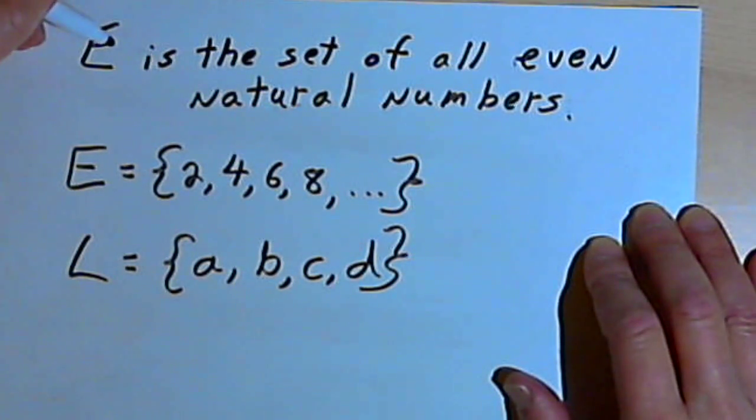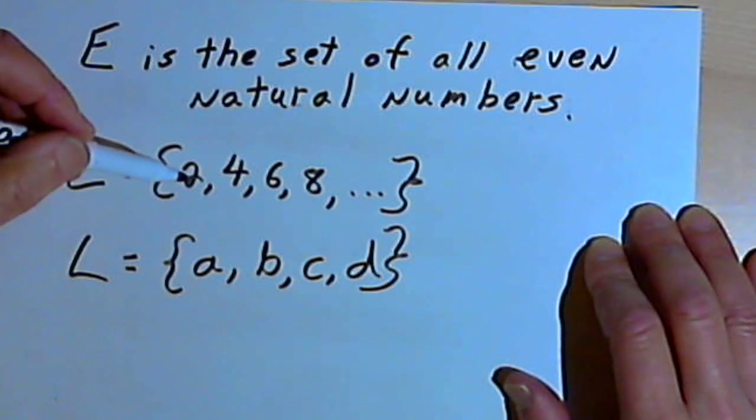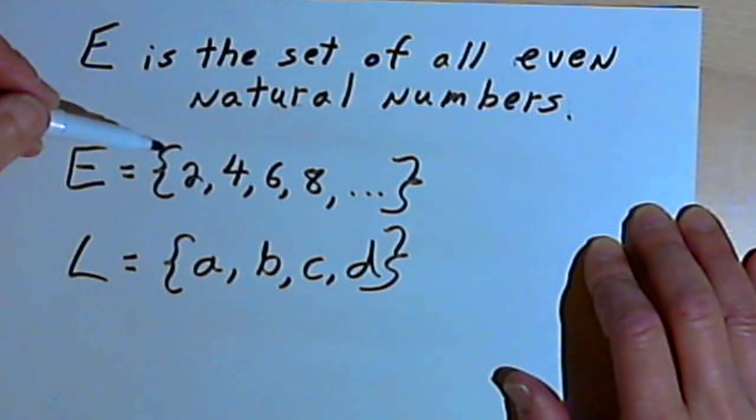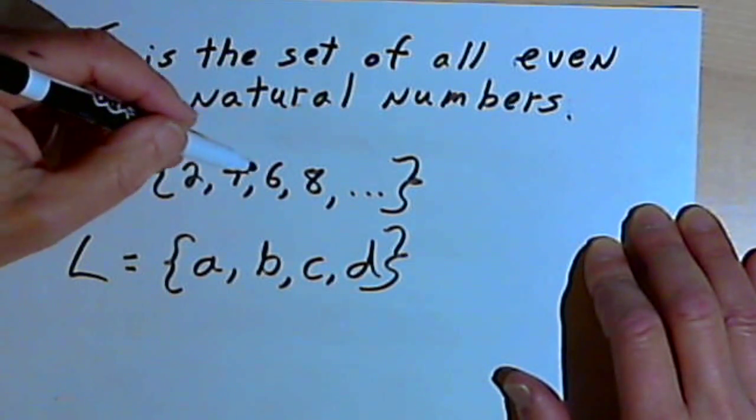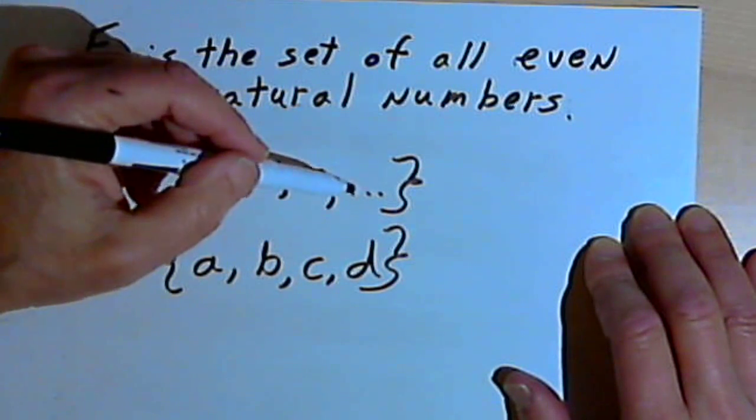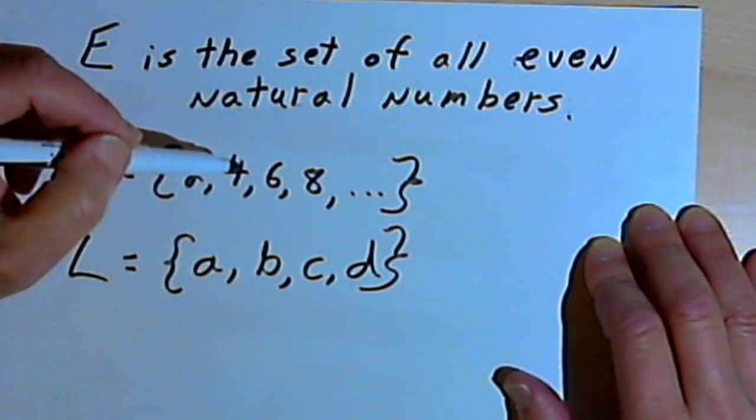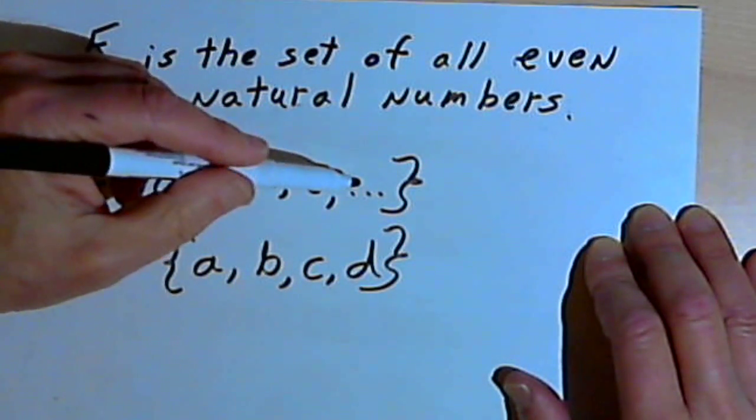So I could write a sentence E is the set of all even natural numbers, would be the collection of those even natural numbers. Now there are different ways to describe this in math notation, and one of the ways is what's called the Roster Method, where you just list the elements that are in the set. So I could say that E equals, and then inside curly braces, 2, 4, 6, 8, and then an ellipsis, the three dots, which means that the sequence is going to keep going.